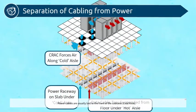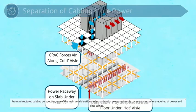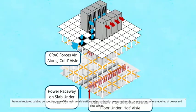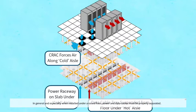Power cables are usually laid to the front of the cabinet's cold aisle. From a structured cabling perspective, one of the main considerations to be made with power systems is the separation, where required, of power and data cables. In general, and especially when installed under a raised floor, power and data cables must be properly separated.